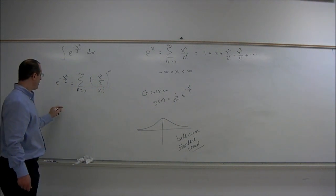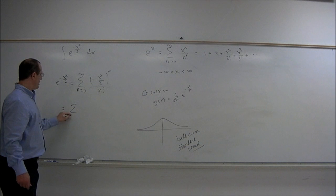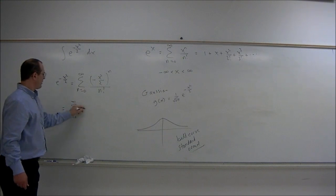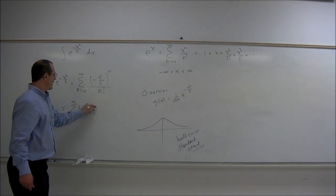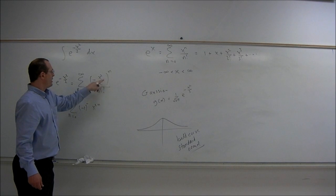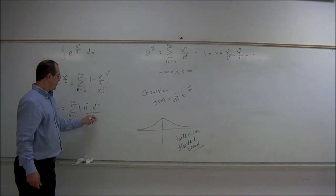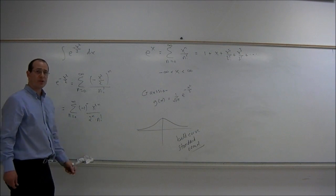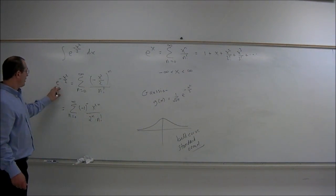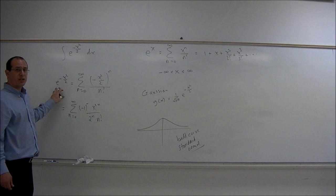Now, if we clean that up, that's the summation n equals zero to infinity of (-1)^n · x^(2n) / (2^n · n!). So there is a power series representation of e^(-x²/2).